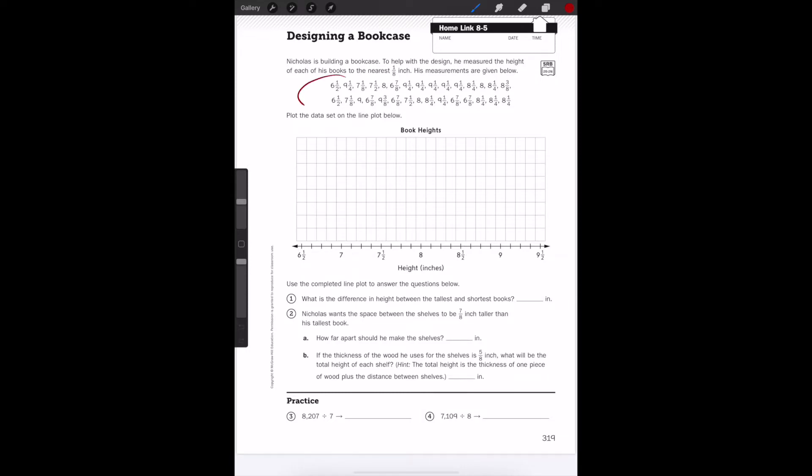And boys and girls, these are the measurements that Nicholas found. It says, plot the data set on the line plot below. When I begin a problem like this, I consider two things: I consider looking at the data, and then I consider looking at the actual numbers on the line plot.